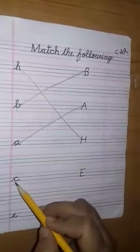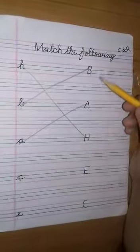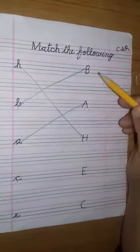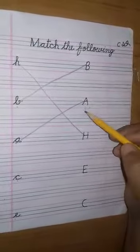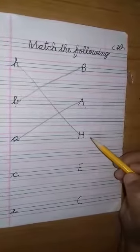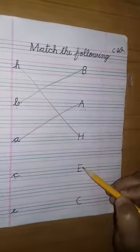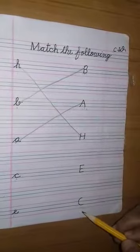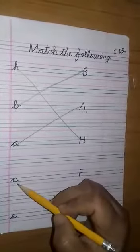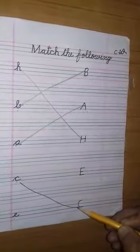Now this is cursive C. So we have to match with capital C. Where is written capital C? Is this capital C? No, this is capital B. Is this capital C? No, this is capital A. Is this capital C? No, this is capital H. Is this capital C? No, this is capital E. Is this capital C? Yes, this is capital C. Now draw a line to match cursive C with capital C. C says K.